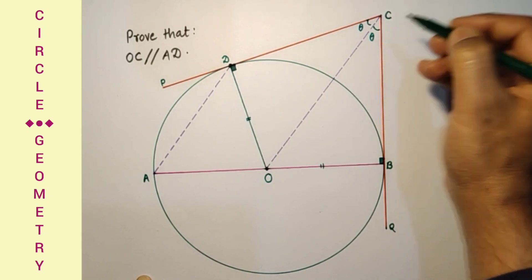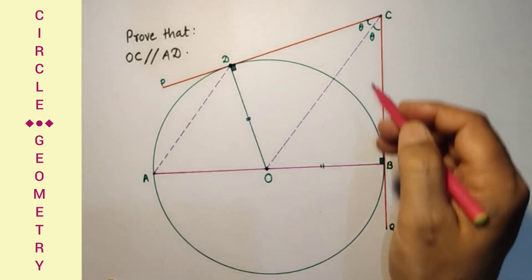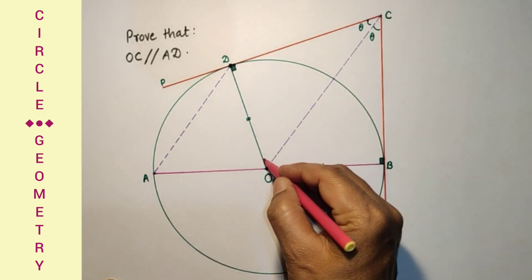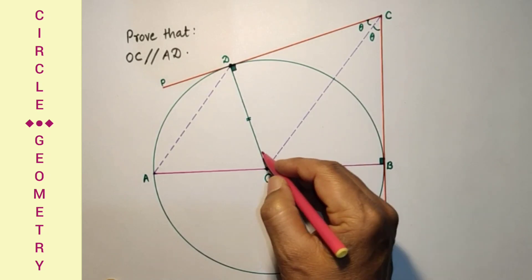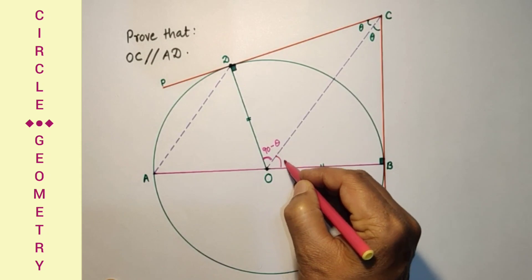This will also be theta. Since this is 90, this is 90, this is theta, theta, this angle will be 90 minus theta, and this is also 90 minus theta.